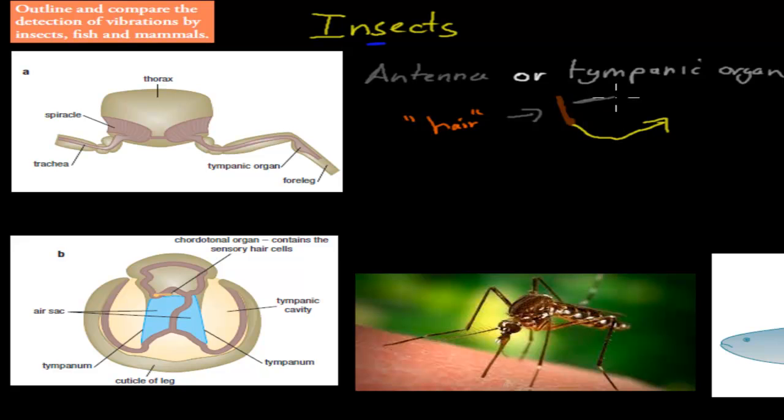This nerve then gets sent to the brain for interpretation. So whenever these hair cells vibrate, going back and forth, that's when this nerve will also be stimulated, will be activated, and this nerve will send a message to the brain. So hairs are important for insects, fish, and mammals, but where these hair are and how they work could be a tiny bit different.